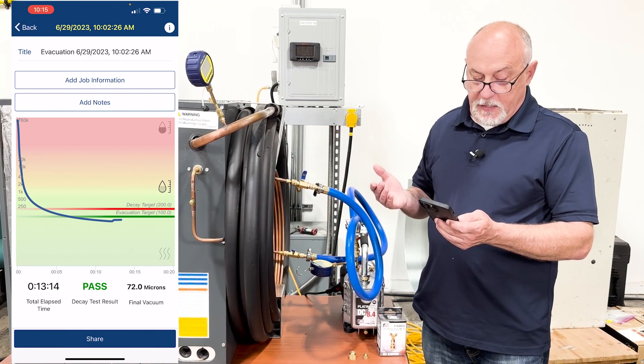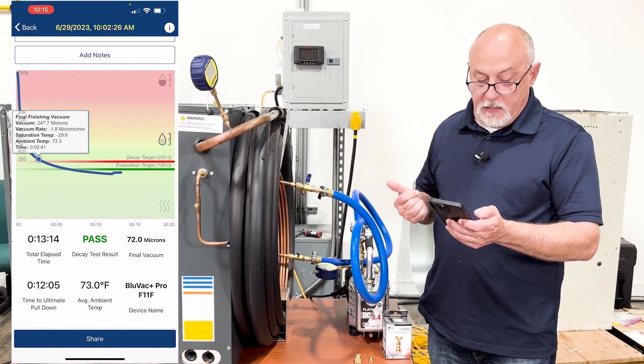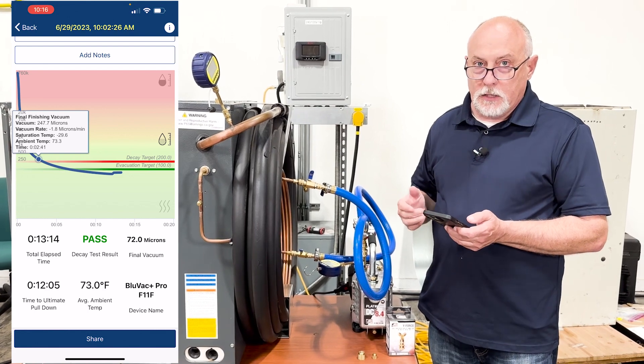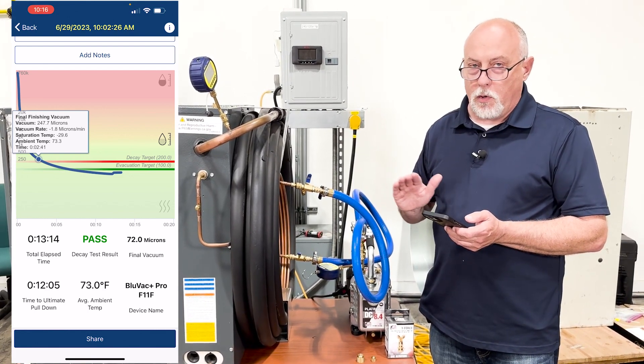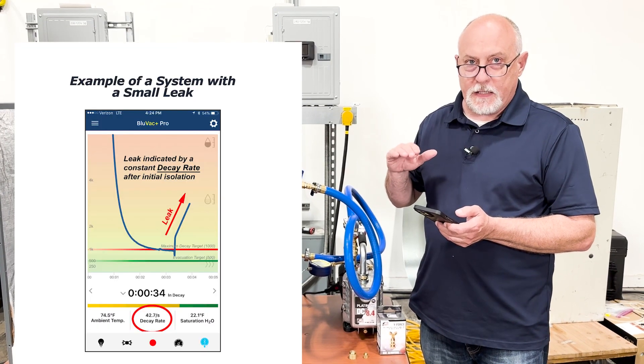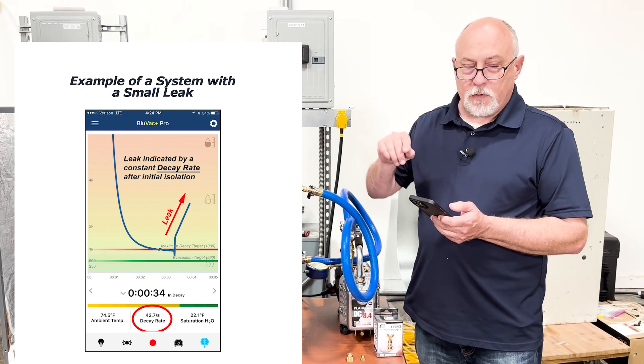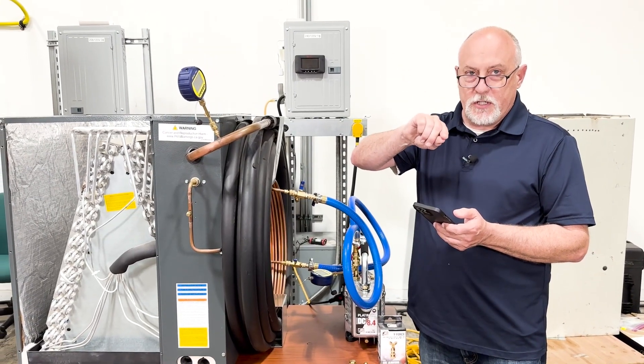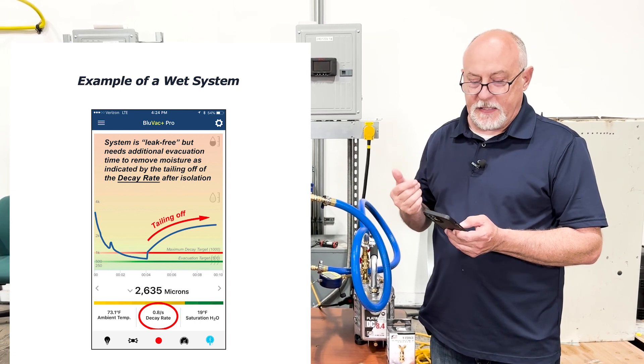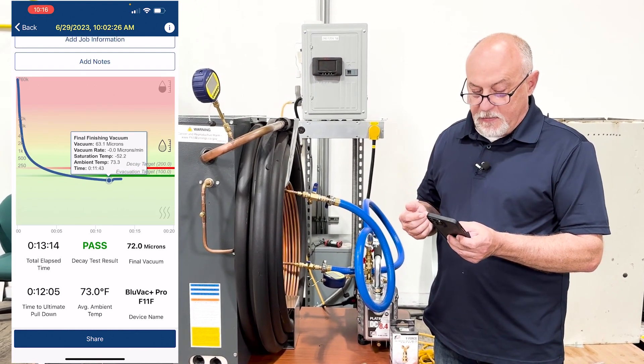If I want to view the report, I can add job information, but you can see my total elapsed time was 13 minutes, 14 seconds to get down to final finishing vacuum of 72 microns. Ultimate pulldown was at 12 minutes and five seconds at an average temperature of 73 degrees with a BlueVac Pro. So you can see how quickly you can do this. And it's so important to get that system dry and make sure that you don't have this rapid rise. And I'll show you a little graph of that on a slide here. But that rapid rise is an indication of a buildup of vapor pressure in the system. So if we have a leak in the system, we're going to have a constant rise over run. It's just going to be a straight linear line going up. If we have moisture in the system, it's going to go up and then it's going to tail off like this. And that tailing off is an indication that we have moisture in the system. So we want to make sure that we get that ultimate moisture level down as low as we can. And in this case here, we got it down to a saturation temp of negative 50.